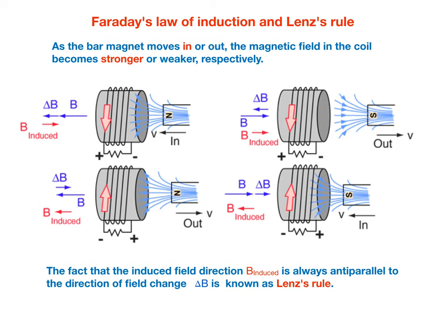The two cartoons on the right consider the situation where the south pole of the bar magnet is moved out and then into the coil. In this case, the magnetic field inside the coil is directed to the right. The change delta B can point to the left as the south pole is moved out, because the magnetic field decreases in magnitude; or delta B points to the right when the south pole moves into the coil. In both cases, in agreement with Lenz's rule, the induced magnetic field associated with the induced current is opposed to the change delta B. The polarities in the drawings indicate where positive charges accumulate (plus sign) and where they diminish (minus sign). This convention is not consistent throughout the literature; sometimes polarities are indicated for an equivalent DC circuit driven by a battery.